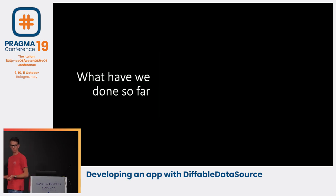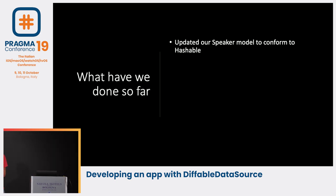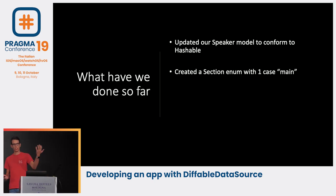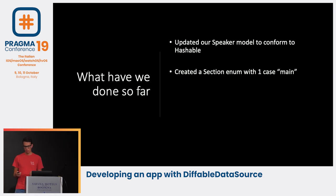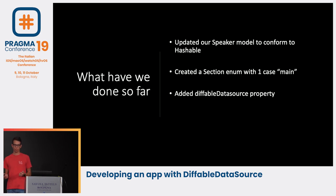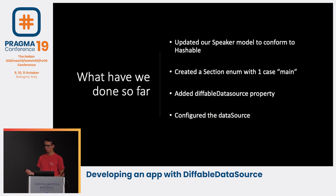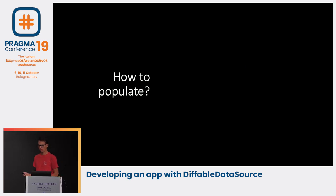So what have we done so far? We updated our Speaker model to conform to Hashable. We created a Section enum with only main in it, in our view controller. We added the diffable data source property to our view controller. And we configured the data source.